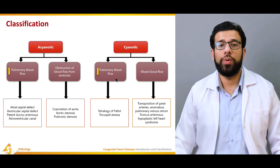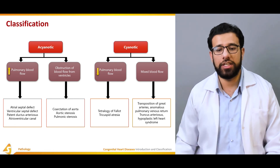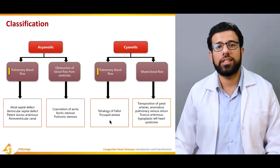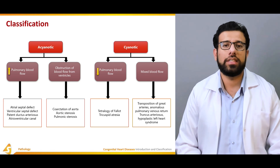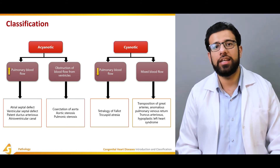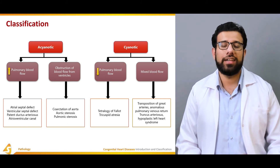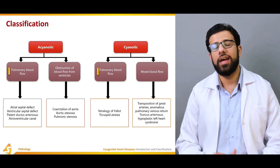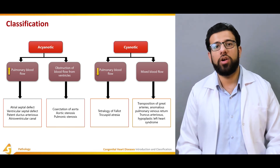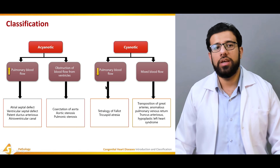In the cyanotic group, decreased pulmonary blood flow and mixed blood flow involve shunting and mixing of oxygenated and deoxygenated blood. Decreased pulmonary blood flow is seen in tetralogy of Fallot and tricuspid atresia. Tricuspid atresia is the complete congenital absence of the tricuspid valve. The mixed oxygenated and deoxygenated blood is supplied to the whole body, increasing oxygen demand — this is why we term it cyanotic heart disease.